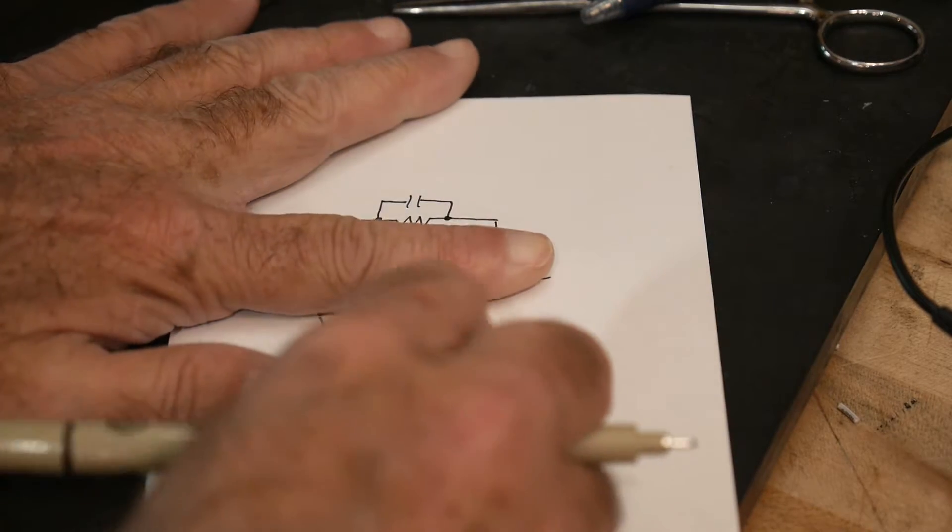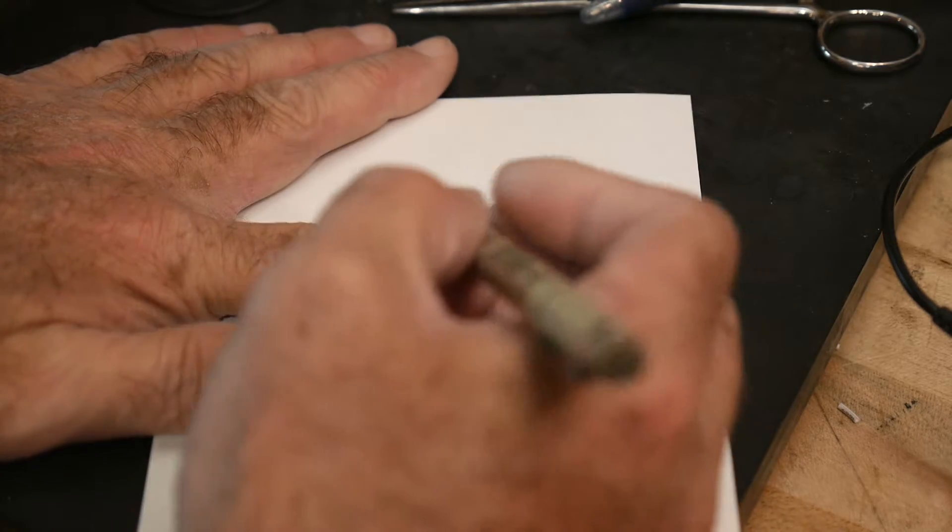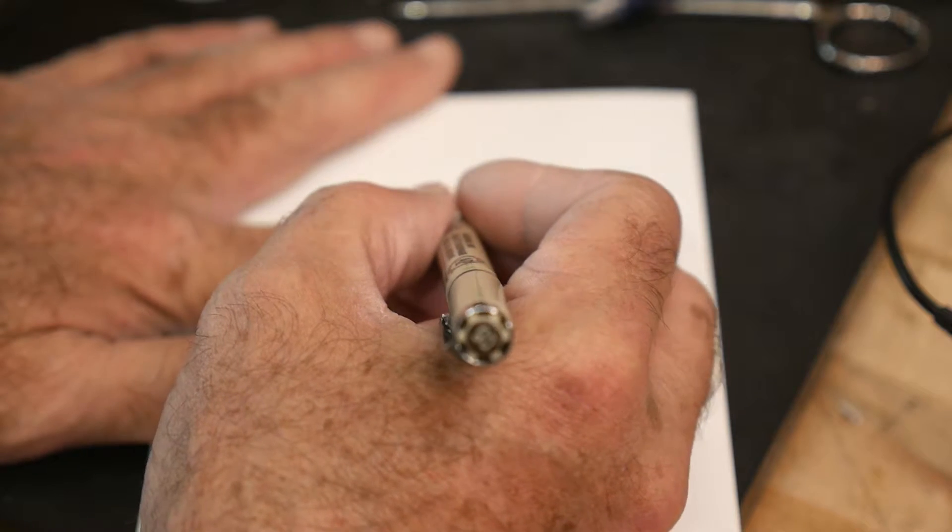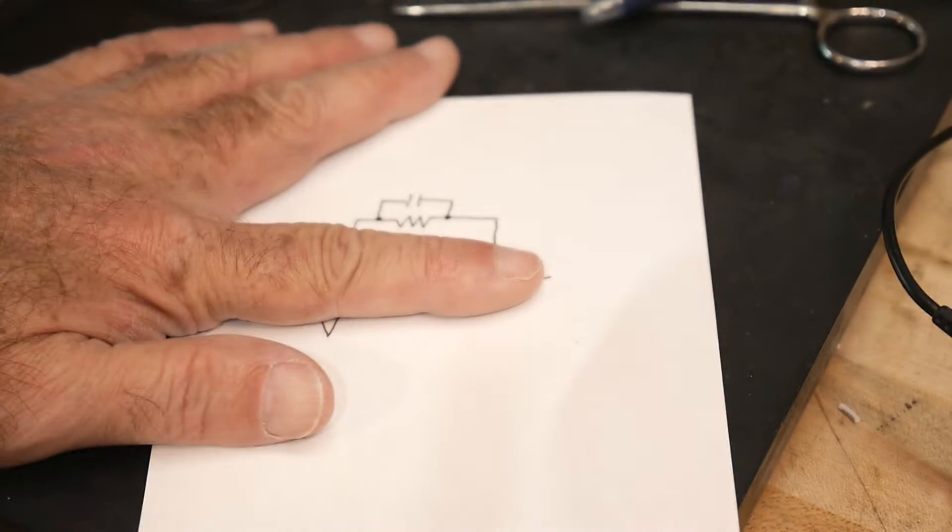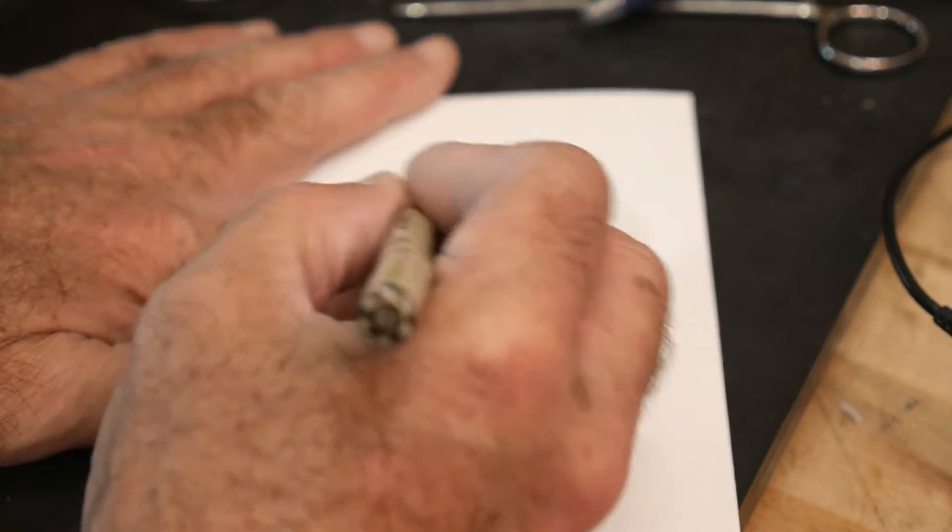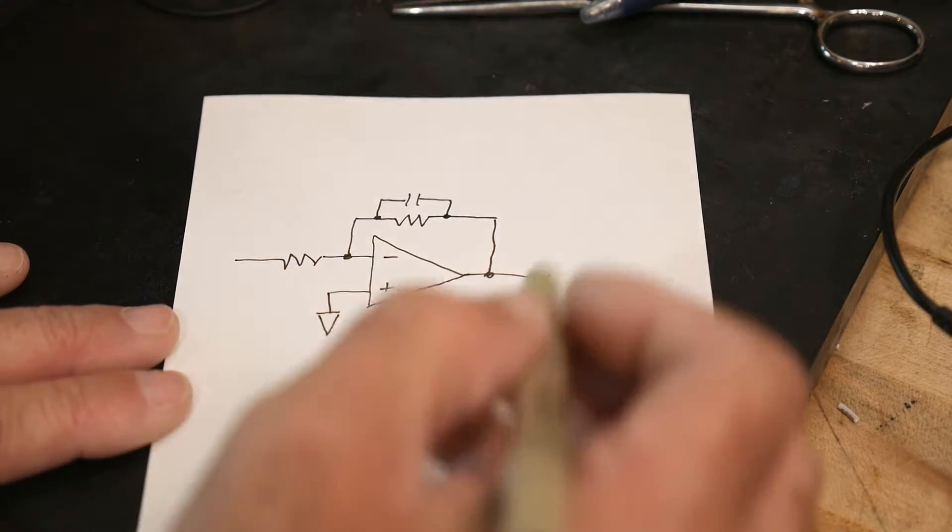If you just take a look at this circuit, just a resistor and capacitor, you can say, well, how does that slow things down? If you put a capacitor across the circuit, it speeds things up. It allows the high frequency to bypass things and get through quickly.